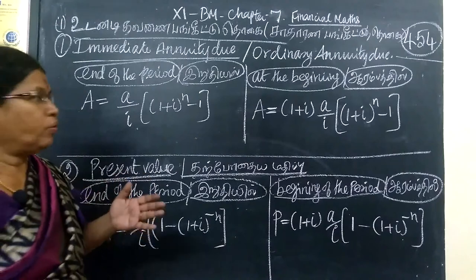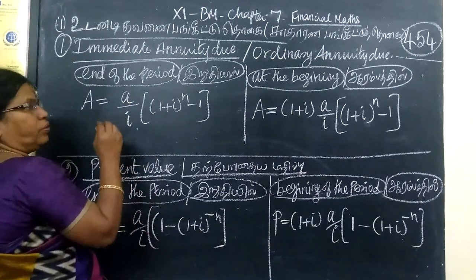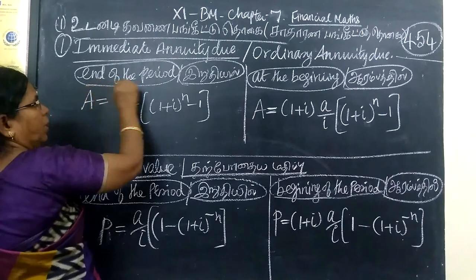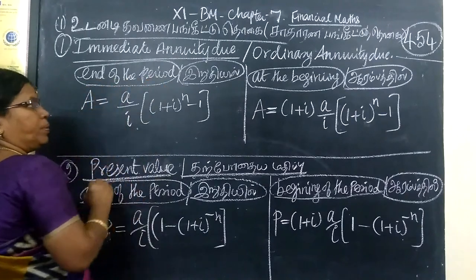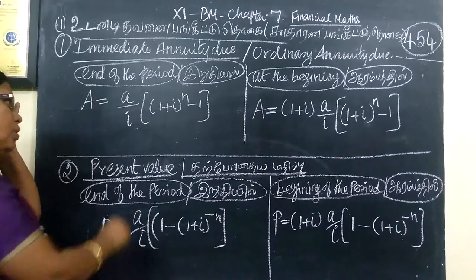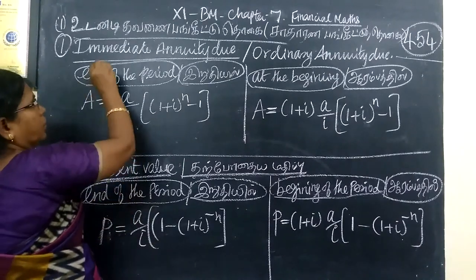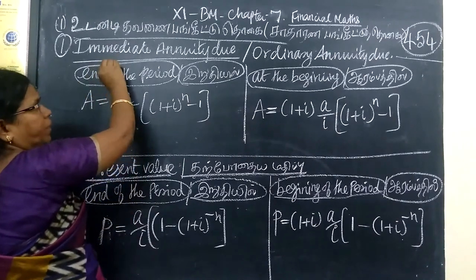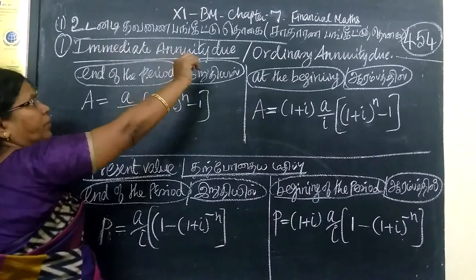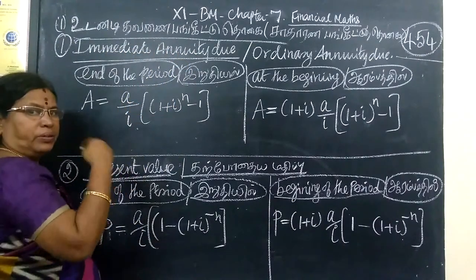Before that, how are the formulas? At the end of the period, you are using this one. In English, we will use immediate annuity due. And then we will use the formula from the introduction of your book.